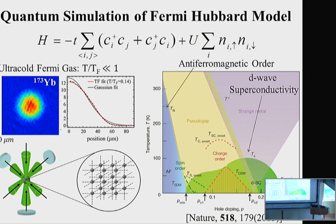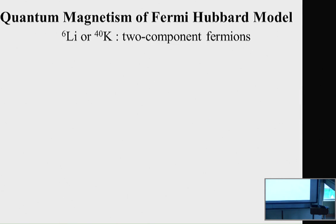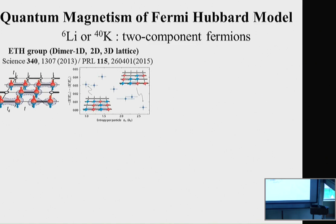Here I show the schematic phase diagram of the high-Tc cuprate, which is not yet well understood. State-of-the-art quantum simulation research of the Fermi-Hubbard model has now revealed its quantum magnetism. These experiments are done using two-component fermions of alkaline atoms — lithium-6 or potassium-40 — and the Bloch group were the first to study the quantum magnetism of the Fermi-Hubbard model.